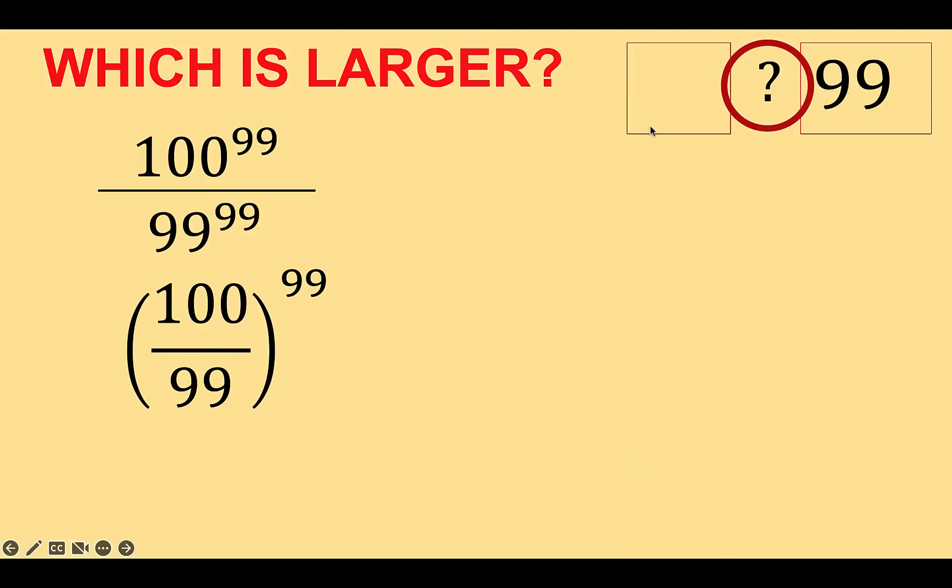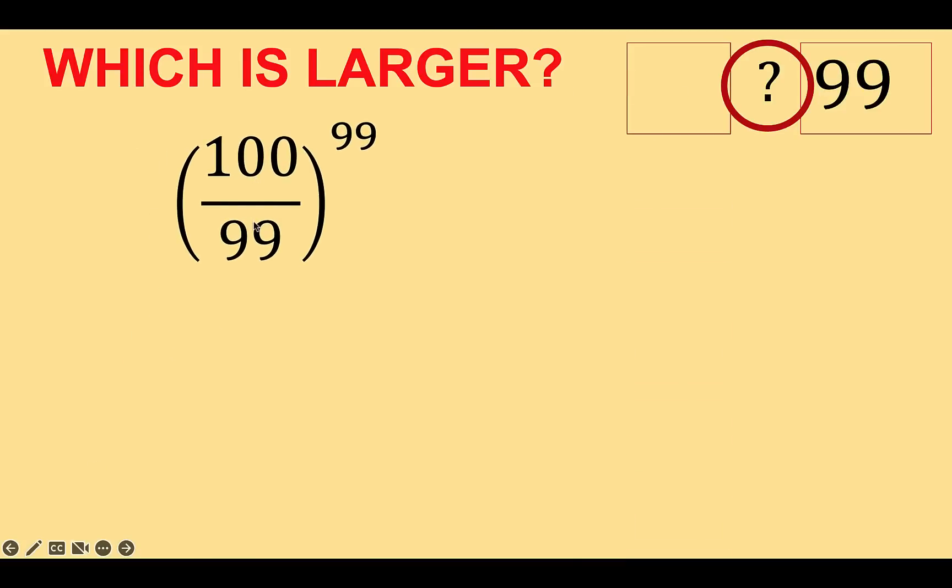So we do not know yet what is the value of this. Now, notice that 100 over 99 is an improper fraction that we can rewrite as a mixed number 1 plus 1 over 99. And then we copy the exponent.